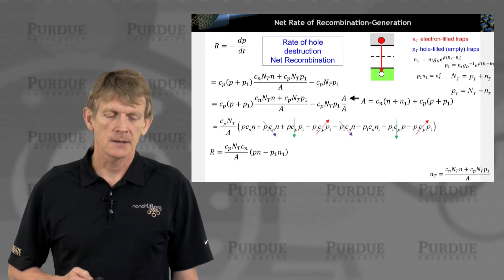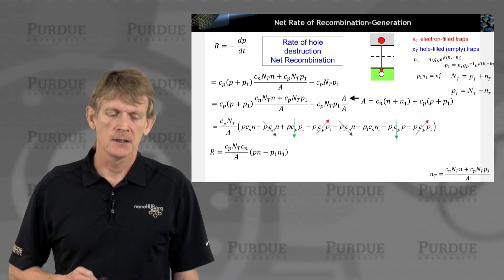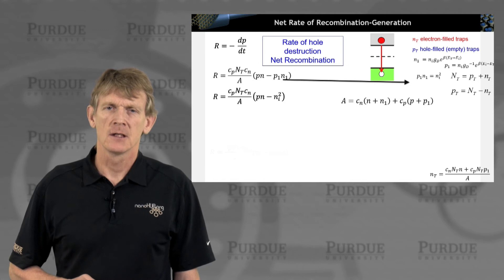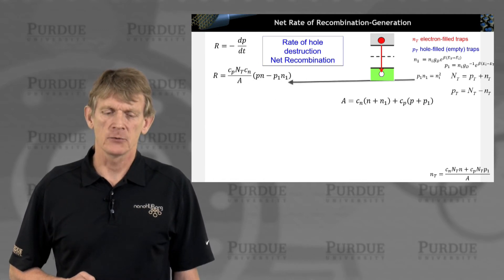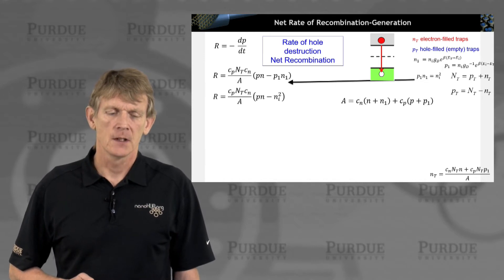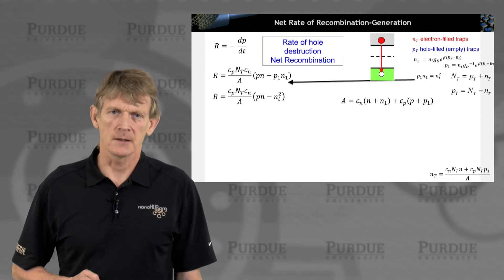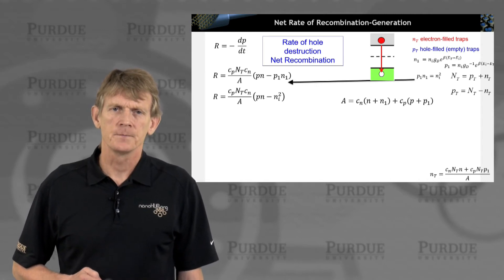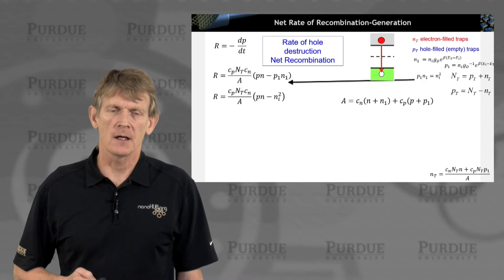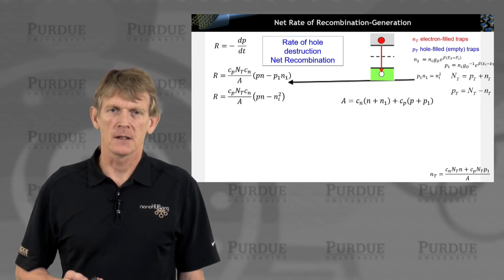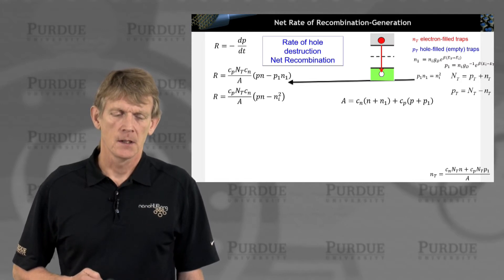So R is now an expression of Pn and P1 N1. Now remember, we derived an expression for N1 and P1. They are related by the law of mass action. So we can plug this in. P1 times N1 is just Ni squared. Alright. So now we have an expression for R that just depends on the number of electrons and the number of holes, and an equilibrium number of Ni squared.